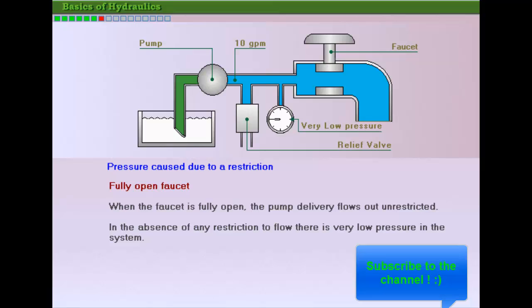This example depicts the development of pressure in a system due to a restriction in piping. A relief valve set at 1000 psi is connected to the pump outlet.